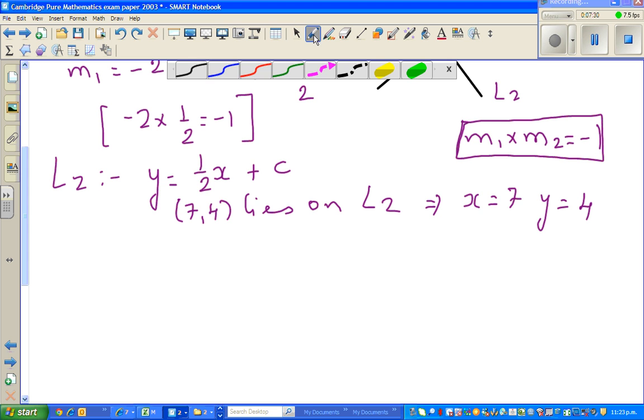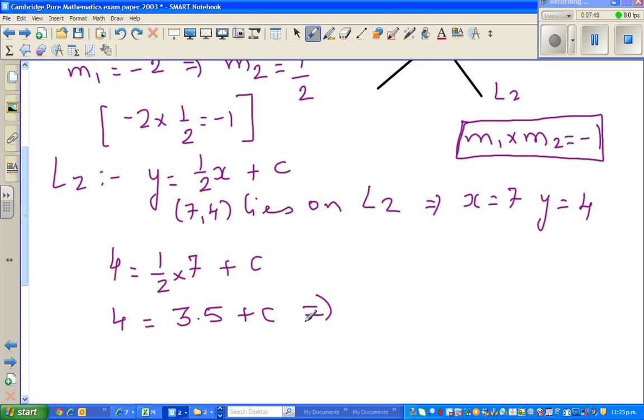I can put x as 7 and y as 4. So 4 equals half times 7 plus c. So 4 equals 3.5 plus c, which implies c has to be 0.5. So L2 is y equals half x plus half.